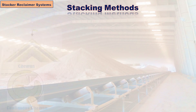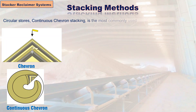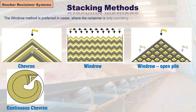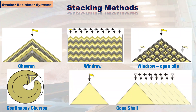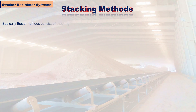The most commonly used stacking methods are chevron, windrow, and cone shell. The chevron method is most commonly used in circular stores with continuous chevron stacking. The windrow method is preferred in cases where the reclaimer is only operating in one part of the pile cross section at a time, or where segregation would make an open pile base unacceptable — typically in coal stores. The cone shell method is used where homogenization is not necessary.